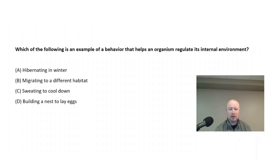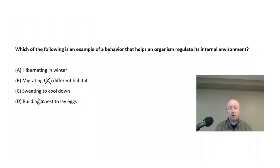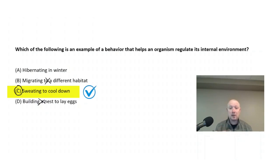Let's eliminate some choices. I'm going to eliminate choice D — building a nest to lay eggs would be part of the reproduction process. I'm also going to eliminate choice B, migration, because migration isn't regulating the internal environment; it's moving to a different area. The correct answer is C, sweating to cool down. The sweat on the outside is reducing the internal temperature of the body.